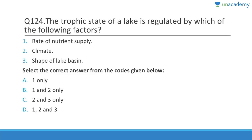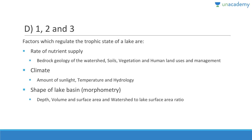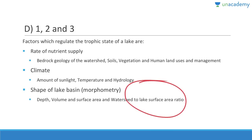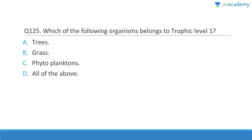Question 124: The trophic state of a lake is regulated by the rate of nutrient supply, climate, and the shape of the basin. Trophic means nutrients; when nutrients increase excessively it is called eutrophication. Factors regulating trophic state include nutrient supply, sunlight, temperature, hydrology, and morphometry (depth, volume, surface area, and watershed-to-lake area ratio).